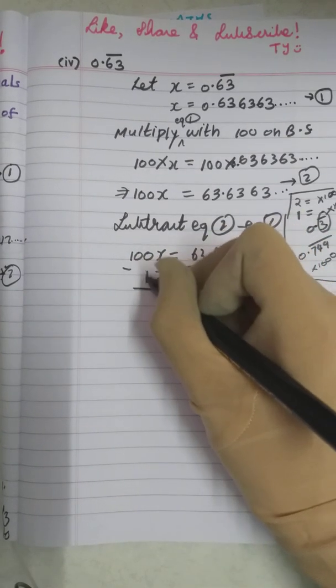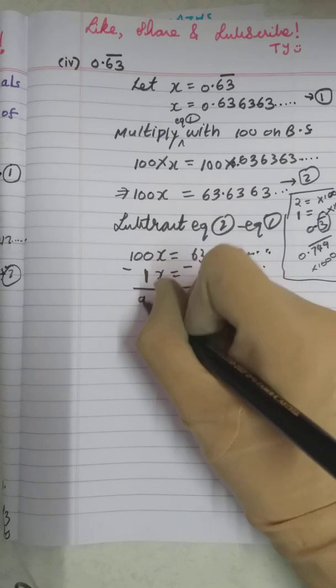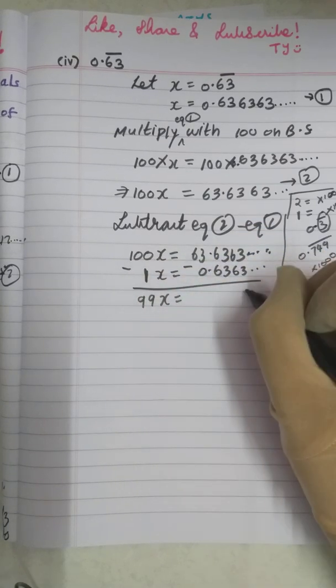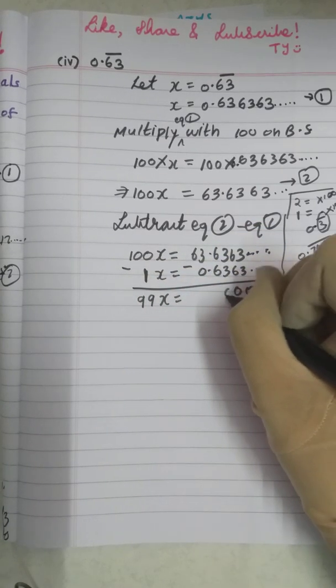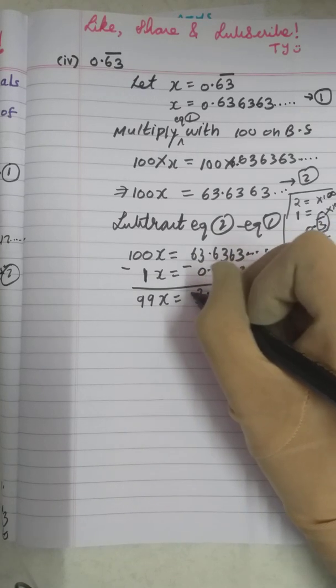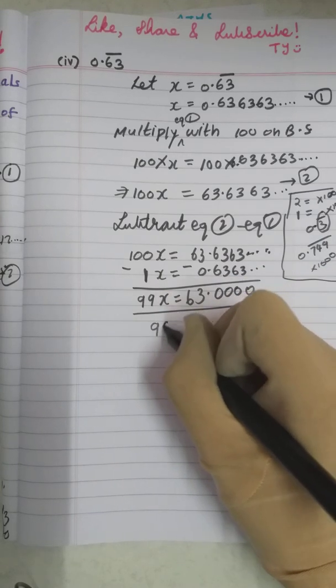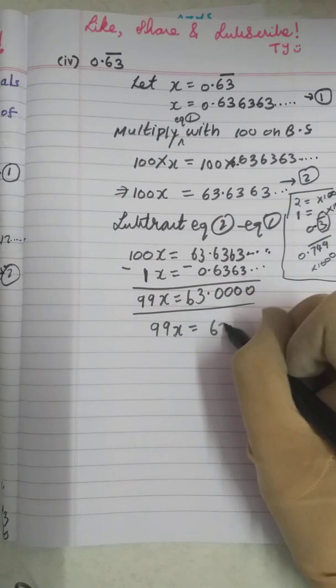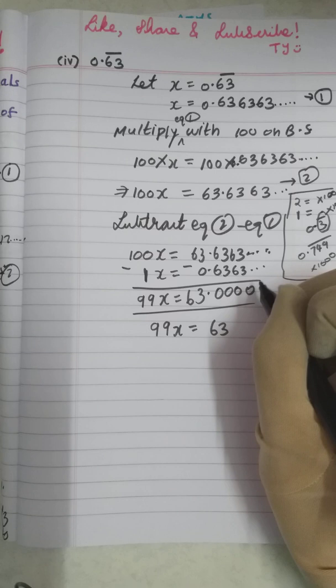Nothing is there here. Before X means here the number is 1. 100 minus 1 is 99. X equals 3 minus 3, 0. 6 minus 6, 0. 3 minus 3, 0. 6 minus 6, 0. Point below point. 3 minus 0, 3. 6 minus 0, 6. It means that 99X equals 63 because after decimal point 0 has no value.